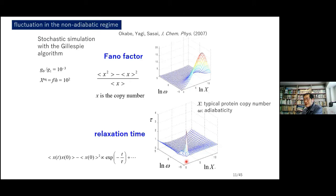It is interesting to see that fluctuation is extremely large when omega is small in the non-adiabatic regime. Also, anomaly can be found in dynamical quantities like the relaxation time. In the non-adiabatic regime when protein copy number is small, the relaxation time becomes extremely large. These anomalies can also be seen with a mean field-like analysis.